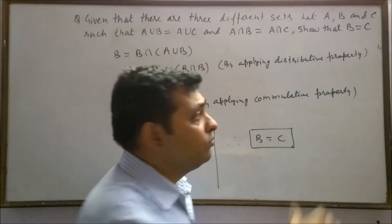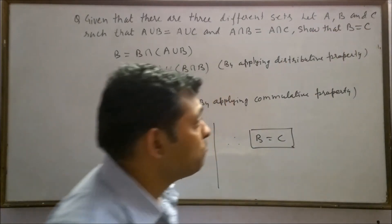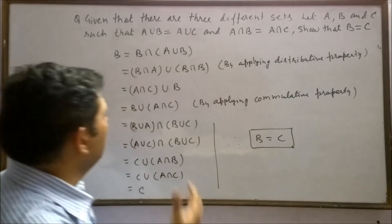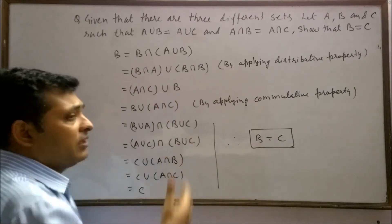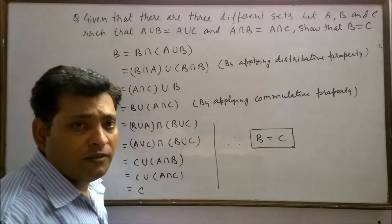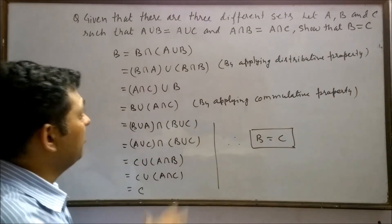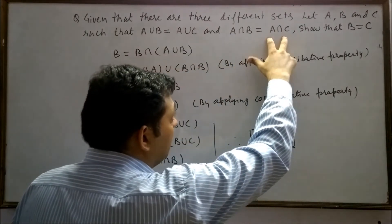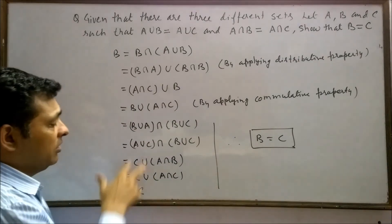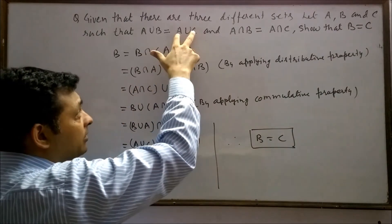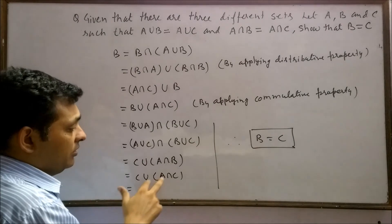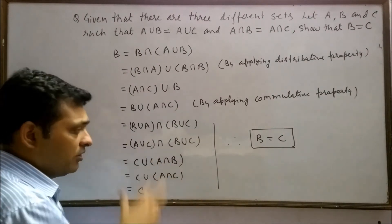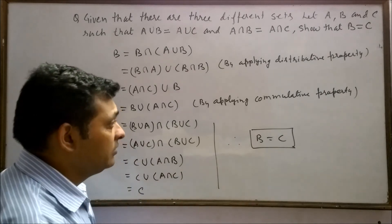Here we had to prove B is equal to C. Our approach was that wherever we could change a relation into set C, we applied it. So we applied B intersection A as A intersection C, and B union A as A union C. In this way, we arrived at the result set C.